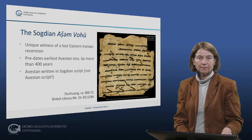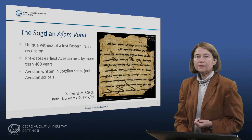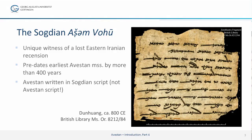The oldest manuscript containing an Avestan text is not written in the Avestan script but in the Sogdian script. This is a unique witness testifying to the wide use of the Avestan texts all over Iran. This manuscript predates our extant Avestan manuscripts by more than 400 years and testifies to Avestan being written in another script than the Avestan script.